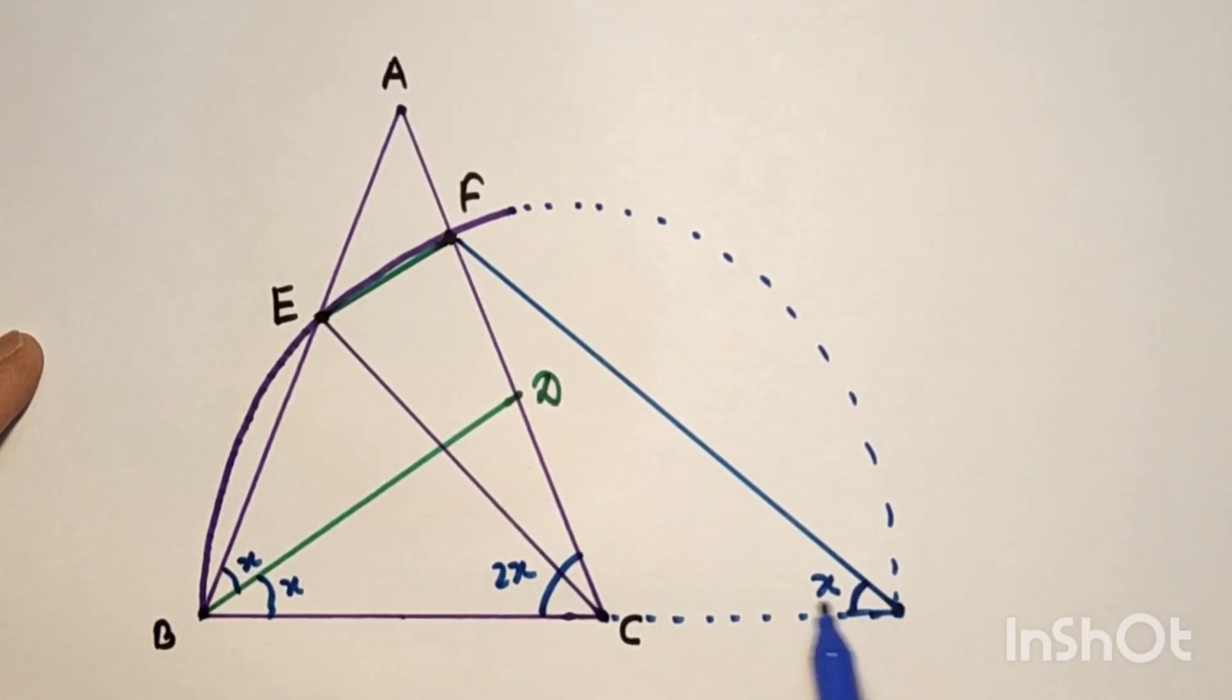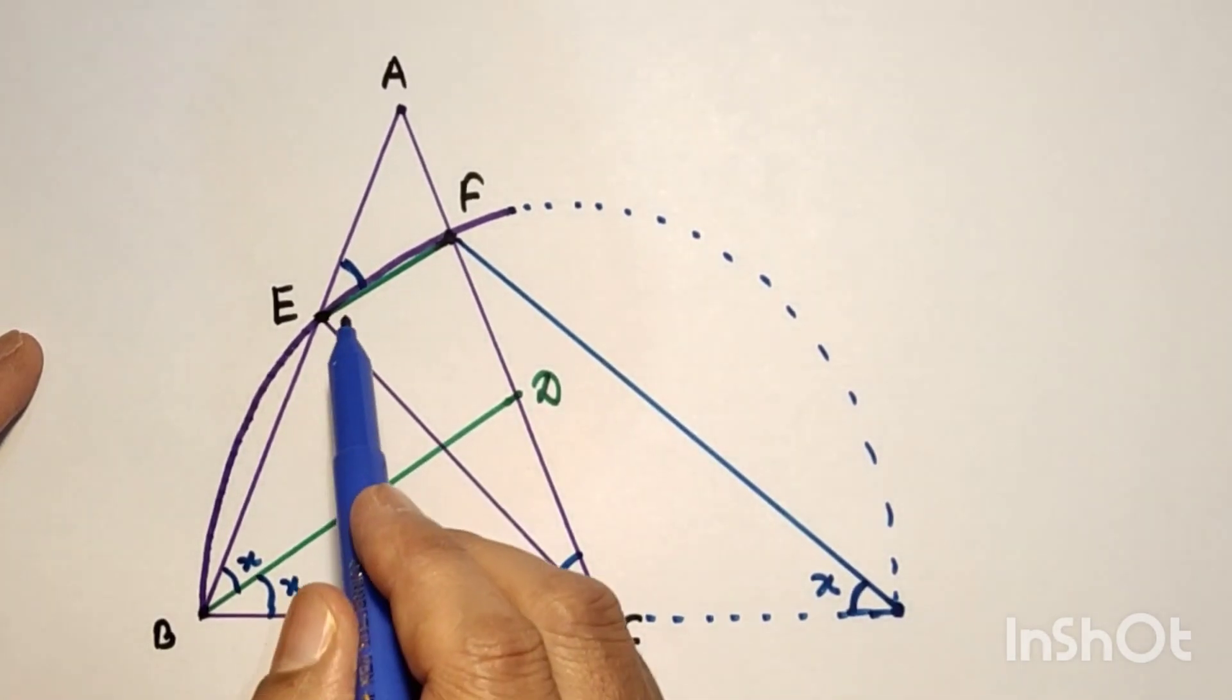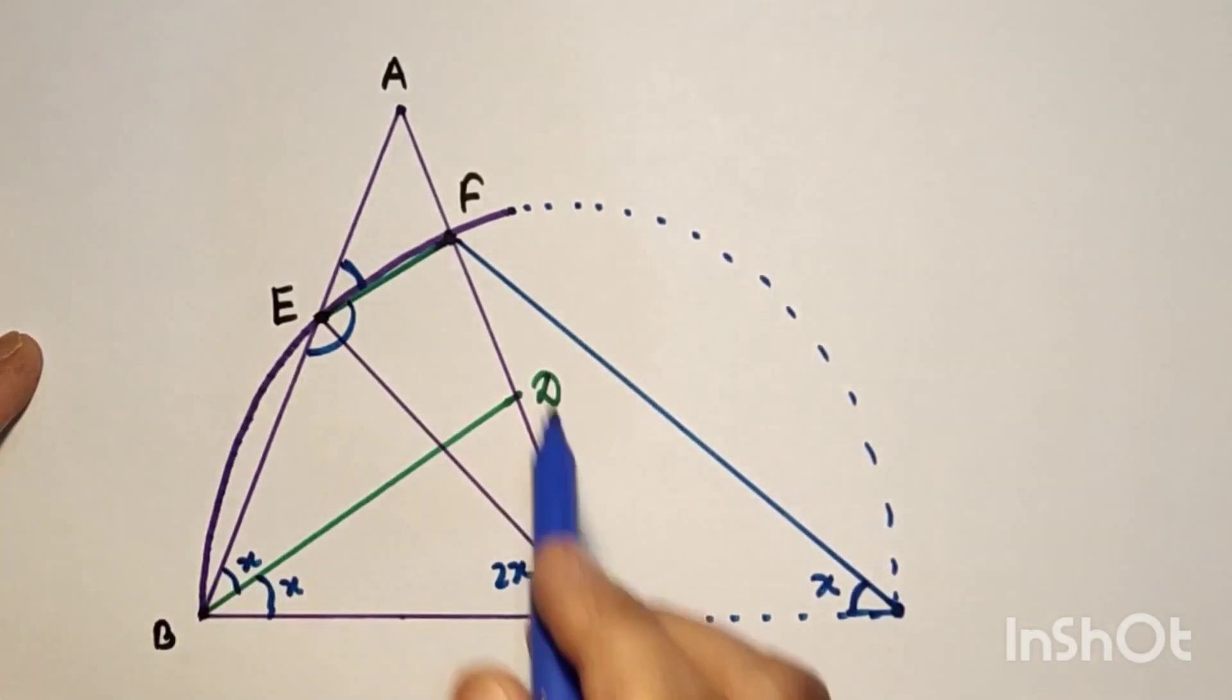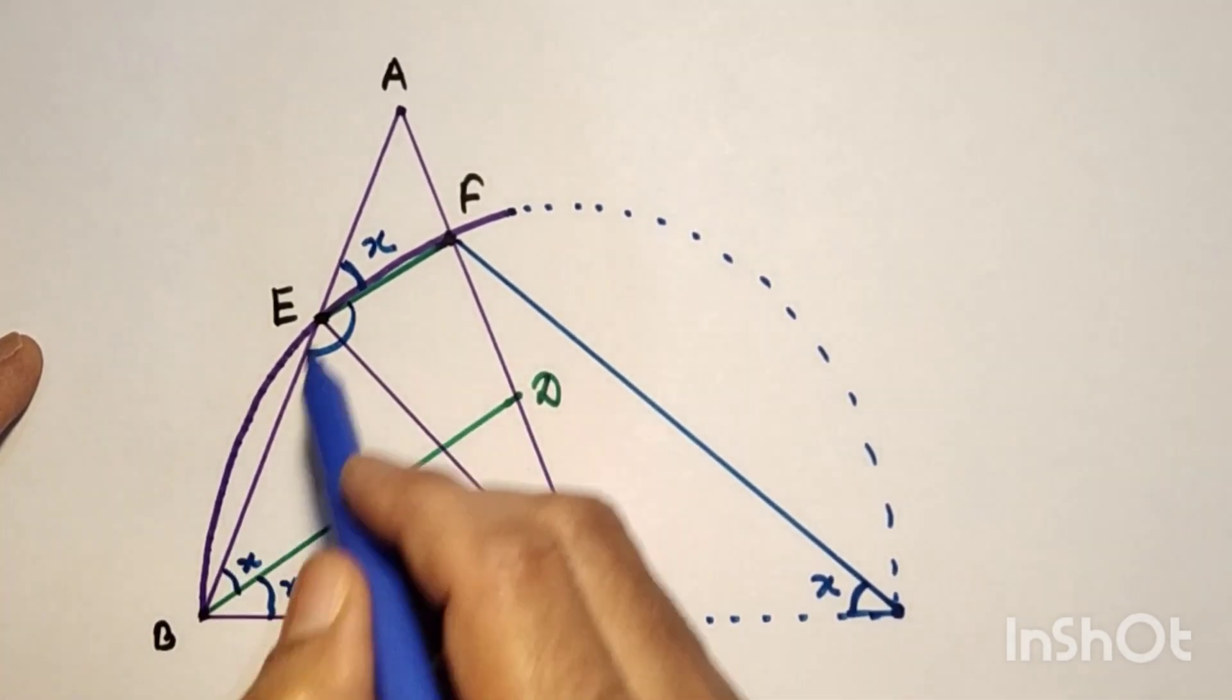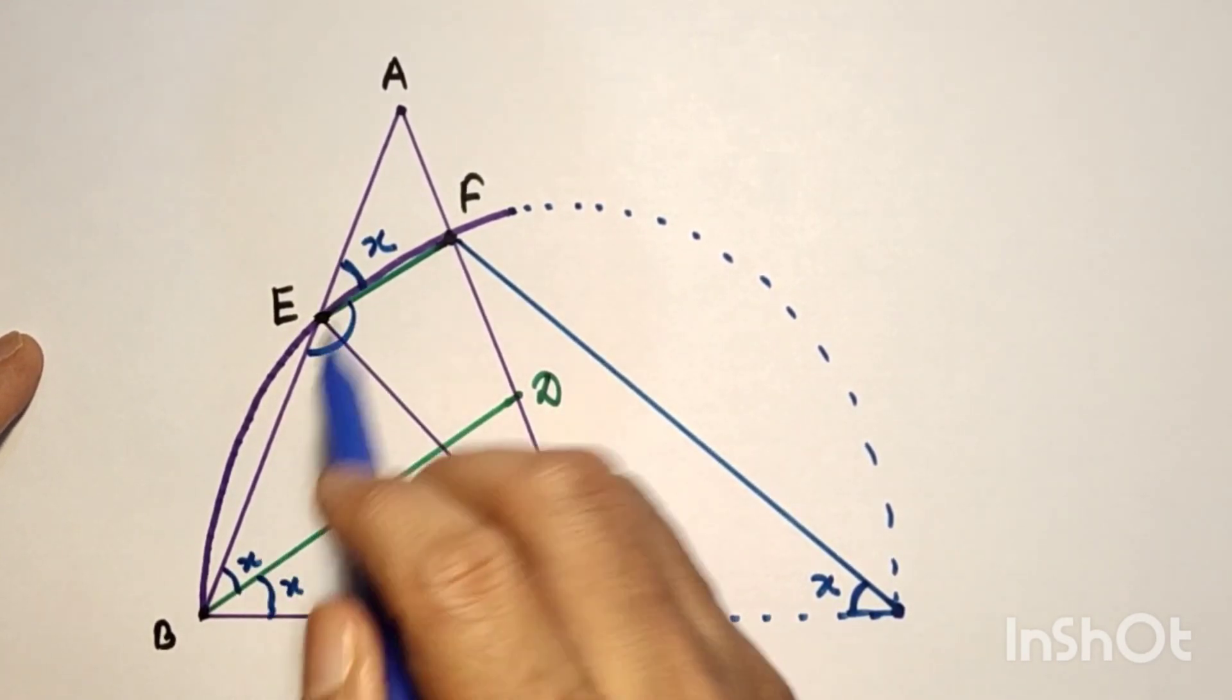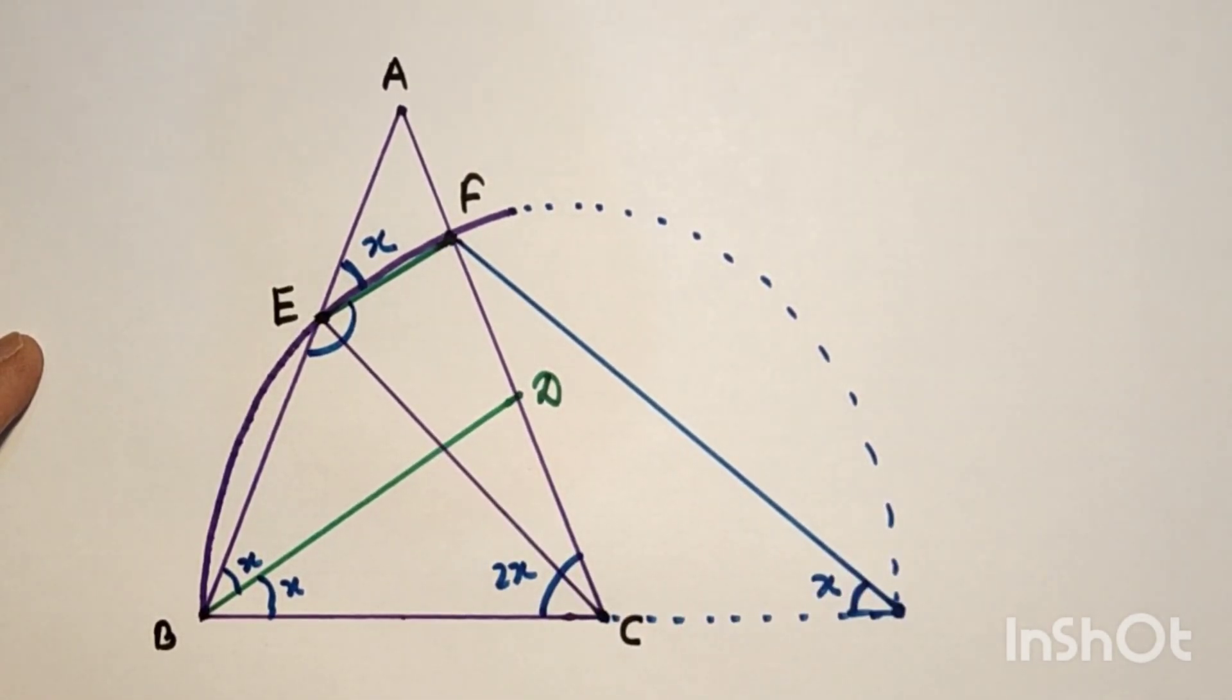And one more thing, this angle is equal to this angle by the exterior angle property. This angle plus this angle will be 180 since opposite angles of cyclic quadrilaterals are supplementary. So this is 180 minus X, so this will be X by linear pair. This angle is X, this angle is X, so the corresponding angles are equal, and hence we can say that EF is parallel to BD, and hence proved.